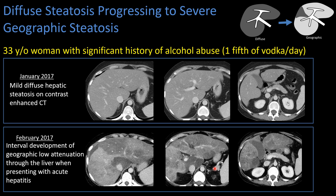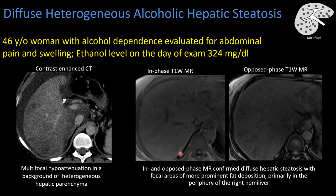When we think about diffuse steatosis, most commonly we think of it as a really homogeneous process, but again we can see a multifocal or heterogeneous appearance. Here on contrast-enhanced CT we see these nodular areas of low attenuation in a background of a heterogeneously low-attenuating liver.